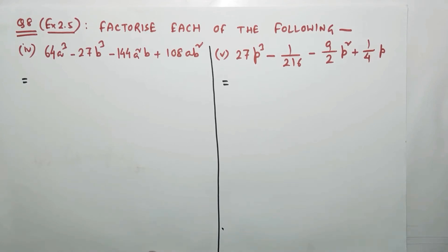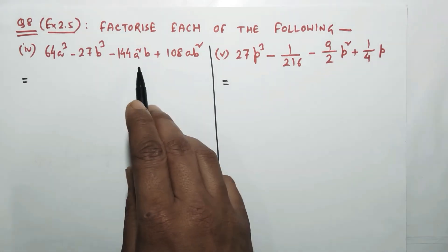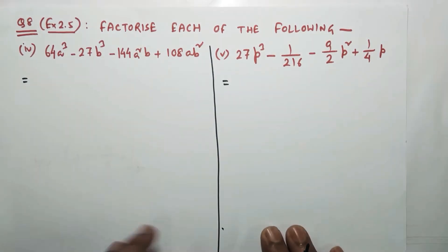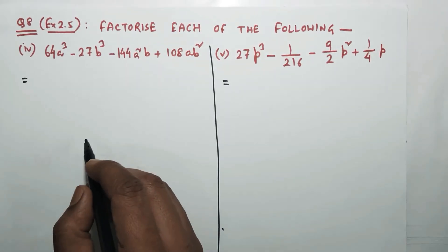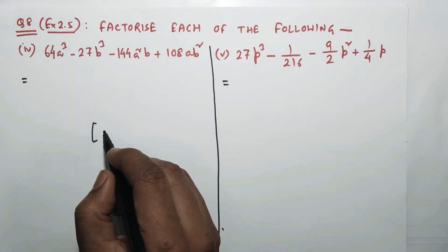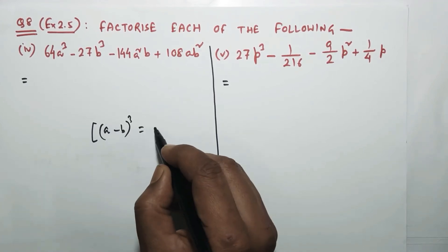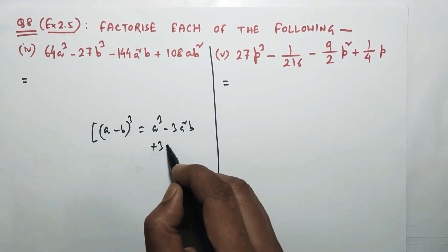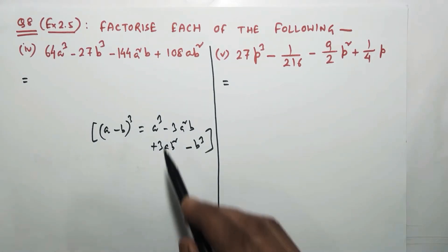To factorize this, you see here this is a term having a cube, this is a term having b cube, it has a term a²b, and here it is a term ab². So we have an identity having this expression. The identity is: (a - b)³ is equal to...